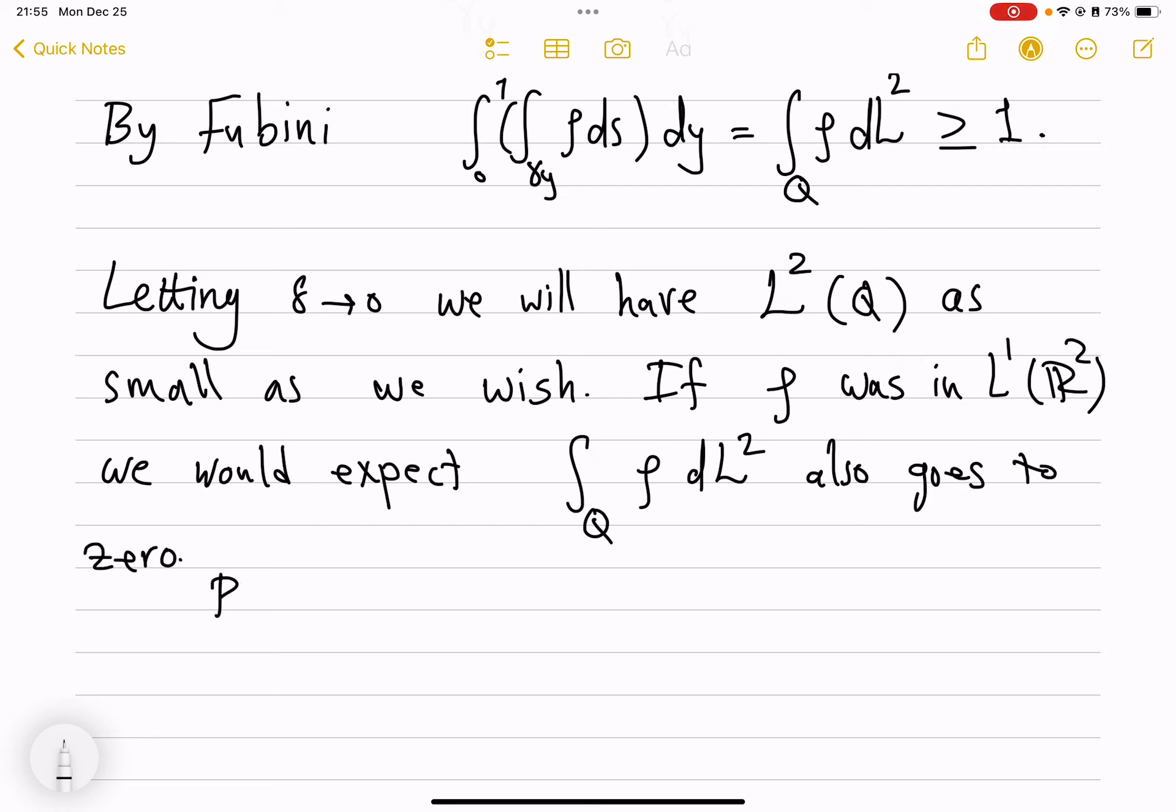we would expect that integral over Q of this L1 function also goes to zero. But we saw that this integral, no matter how small this delta is, integral over Q delta of rho dL2, is bigger than or equal to 1.